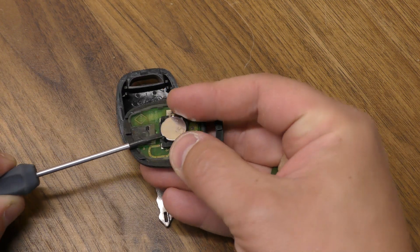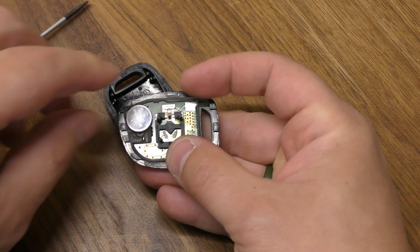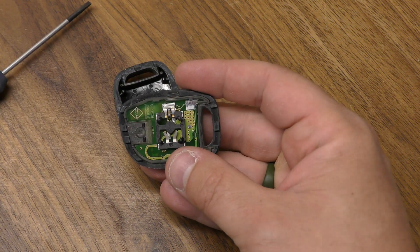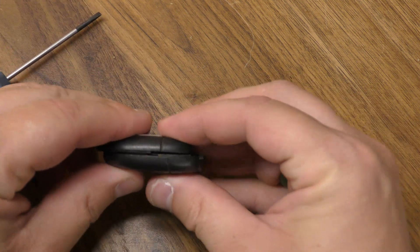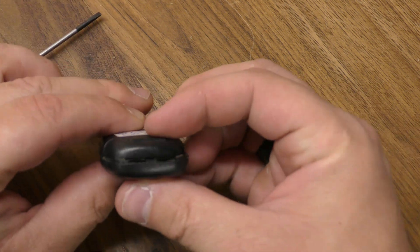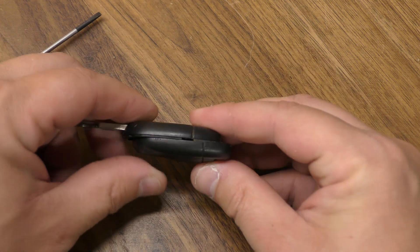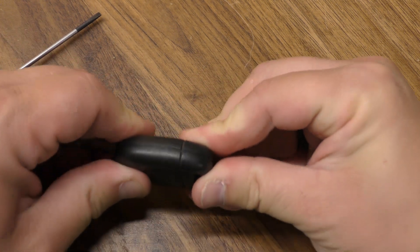Once you have that out, put your screwdriver right here and pry out the dead battery. New battery goes in positive side facing upward like that. And then to put this back on, you want to line it up like that, make sure all the ridges line up, and then push it back in like that.